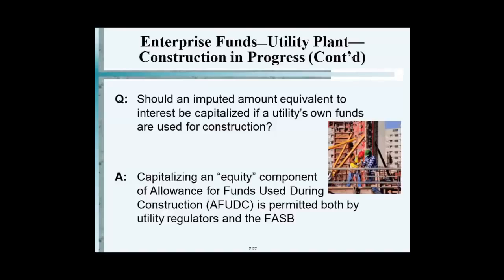The allowance for fund use during construction — you can mark this 'not on exam' because this gets into regulatory accounting principles, which we don't need to go over in this class. Basically, if the utility uses its own funds, there's an imputed rate of return. If you use your own funds and don't borrow, you're allowed to capitalize the cost of your own funds as if you borrowed them.